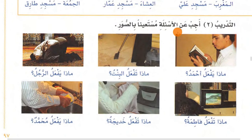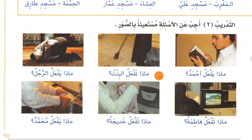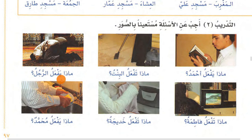Then at-Tadribu ath-Thani: ajib anil-as'ila al-atiya musta'inan bis-suwar — answer the questions making use of the pictures. In the picture you see a boy reading the Holy Quran. The question is: Maza yaf'alu Ahmad? What is Ahmad doing? The answer: Ahmadu yaqra'u al-Quran. Ahmad is reading Quran. Maza taf'alul bint? She is sweeping, so you say: al-bintu taknusu al-ghurfa. The girl is sweeping the room. Maza yaf'alul rajul? Al-rajulu yusalli salat al-fajr. The man is praying fajr.